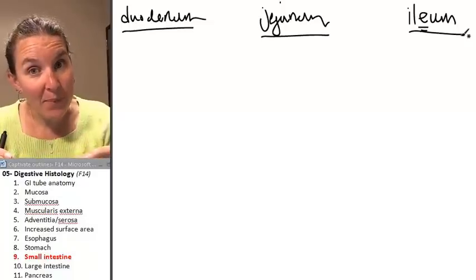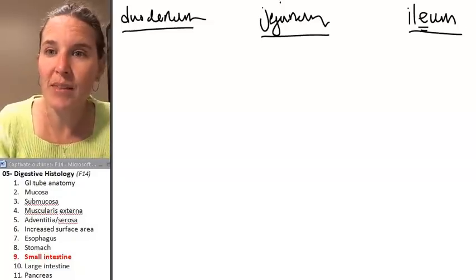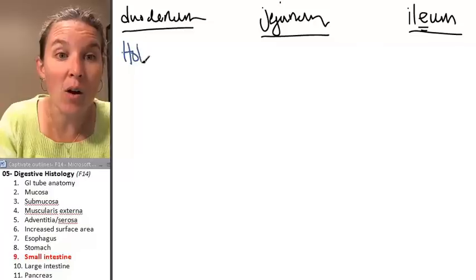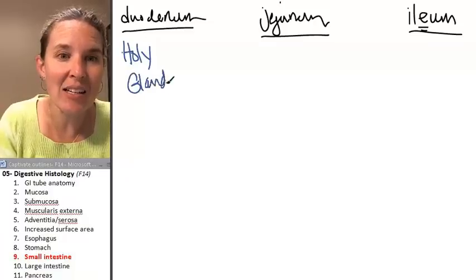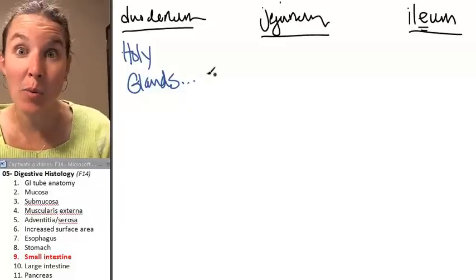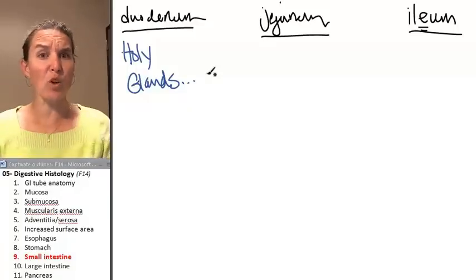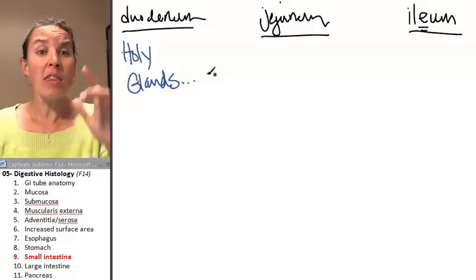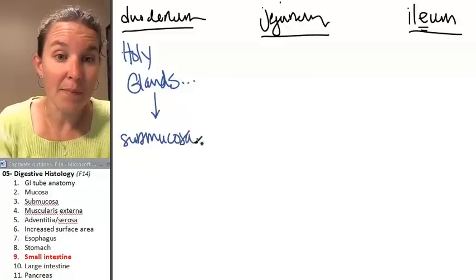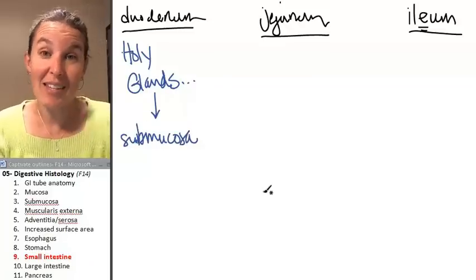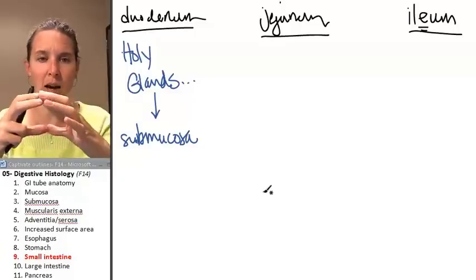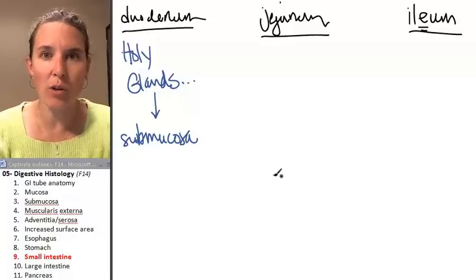To distinguish between them, here's what you're going to look for. In the duodenum — holy glands — not in the mucosa, not in the lamina propria like in the stomach. The stomach was full of glands, but in the duodenum these glands are in the submucosa. If you see a submucosa that looks like a bubbly bubble land, then you know you're in the duodenum.